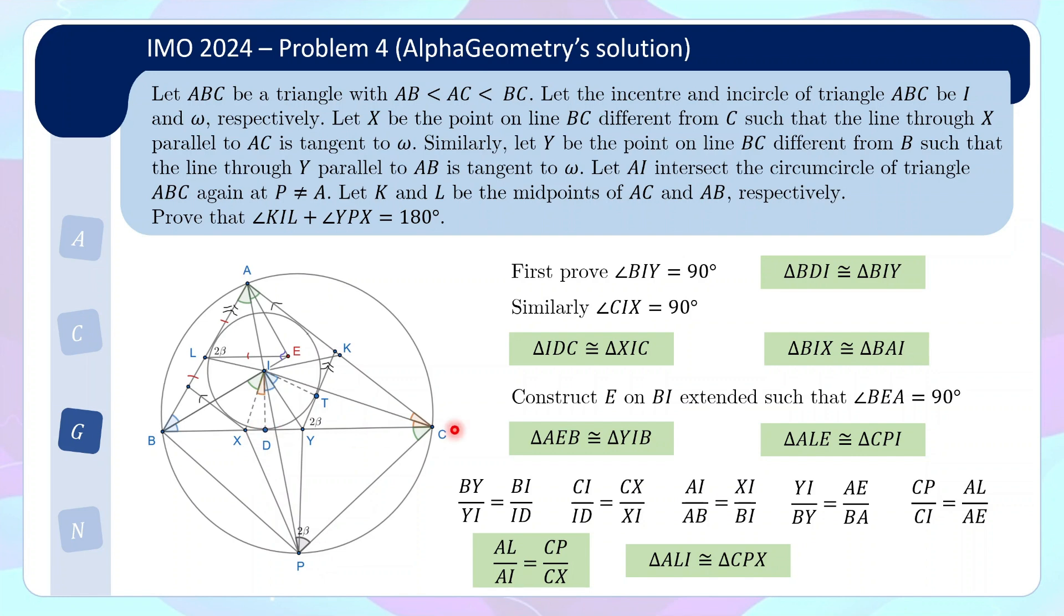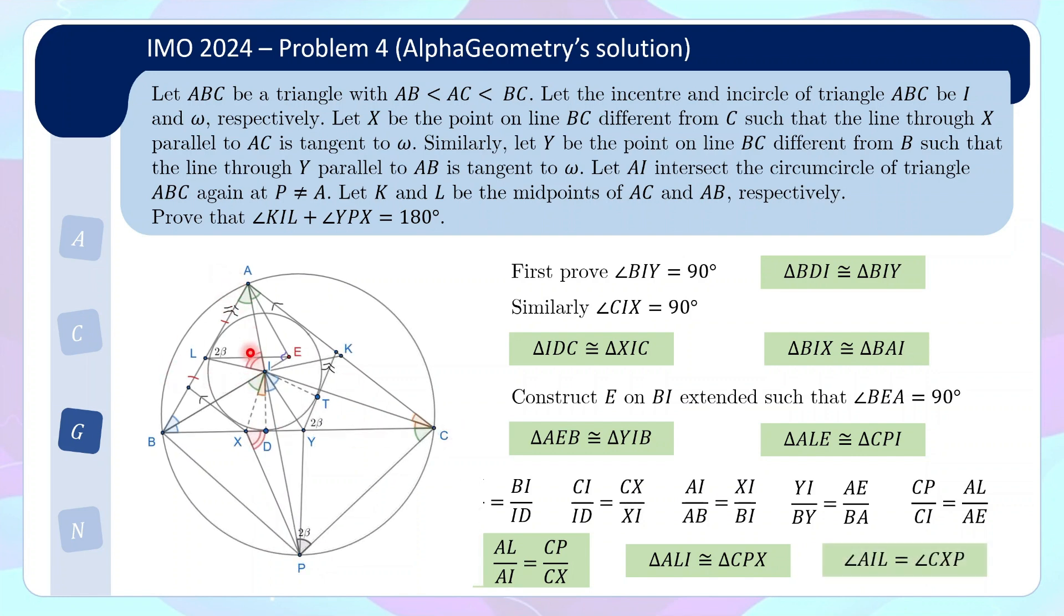And why do we care about this? Well, because ALI contains half of our interest angle here. Remember our interest angle is KIL. We have the left side of the interest angle. And by the similar triangle, it tells us that this is equal to here, CXP, this angle here. So we have translated half of this angle down here. And by a completely symmetrical argument on the other side, which I will not spend another 10 minutes going through again, this angle AIK is going to be equal to BYP, this other angle. So in the end, this relationship, this sum here is basically the sum of the three angles in a triangle, which equals 180 degrees.